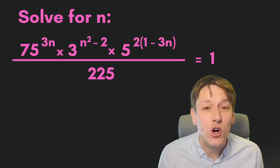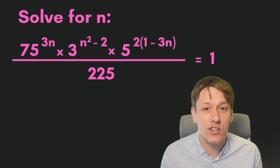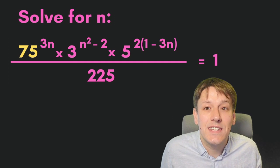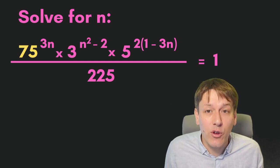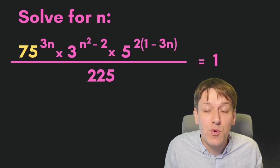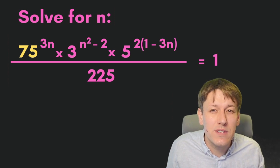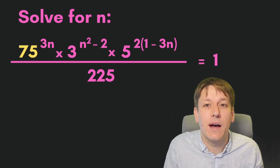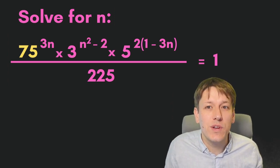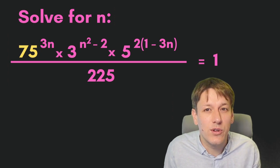This equation looks really complicated to solve, but in fact it's a lot easier than it looks. This question is clearly about indices, and we can see lots of powers of 3 and 5 around, but we've also got 75 and 225 that we need to think about. Once we've rewritten those, the problem becomes a lot easier.